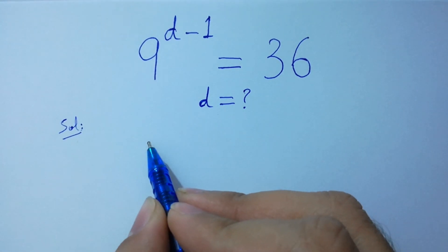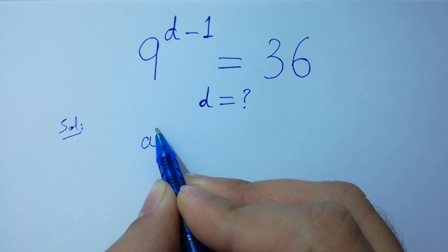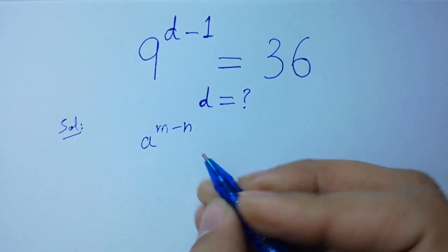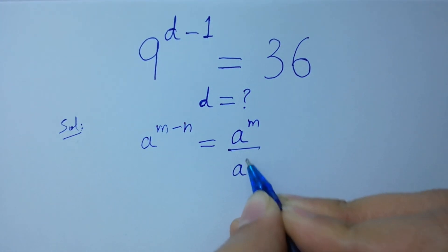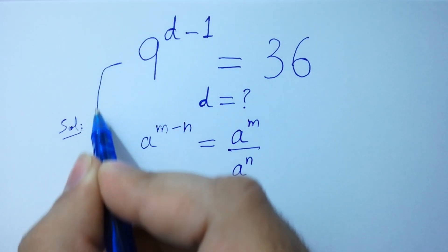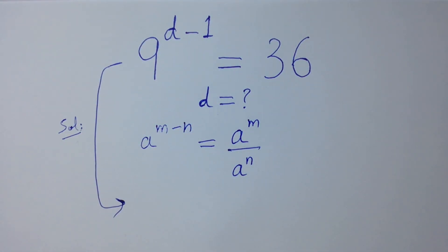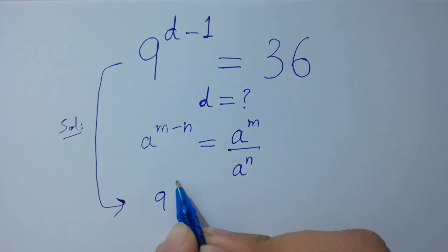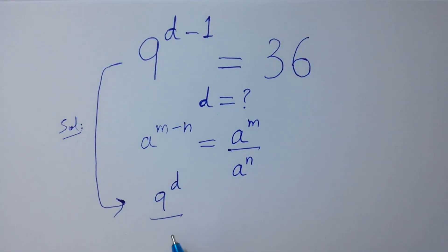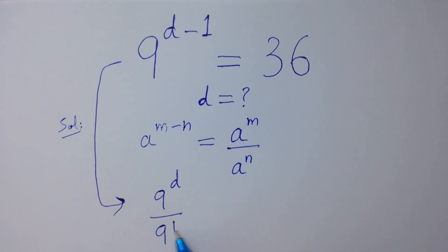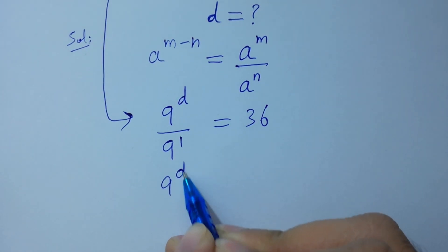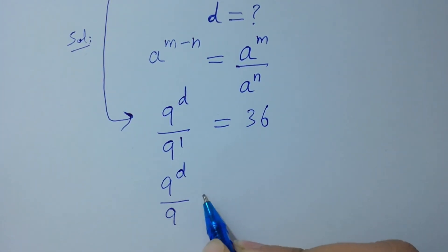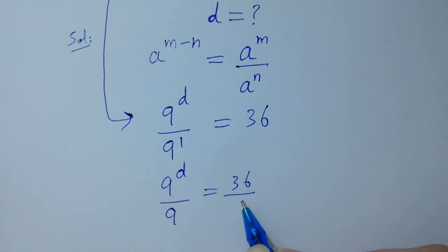As we know that a to the power m minus n equals a to the power m over a to the power n. And so, we have 9 to the power d over 9 to the power 1 equal to 36. That is, 9 to the power d over 9 equal to 36.